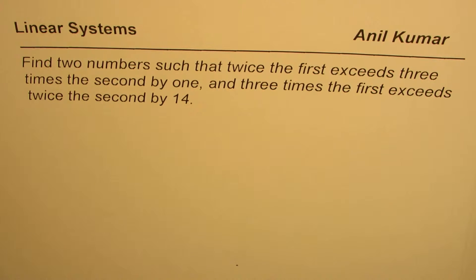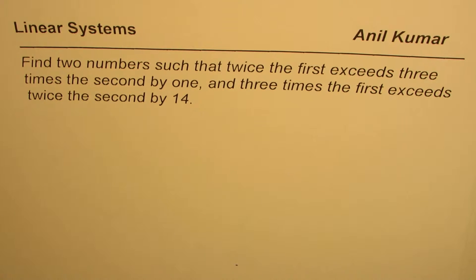I'm Anil Kumar. Let us take a word problem on linear systems. The question is: find two numbers such that twice the first exceeds three times the second by one, and three times the first exceeds twice the second by fourteen.